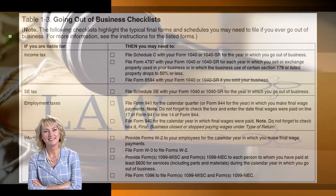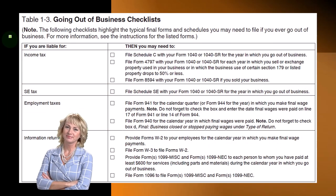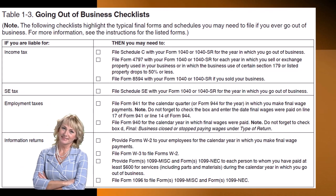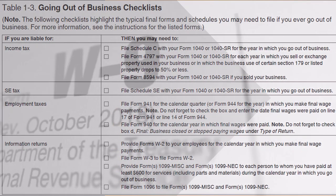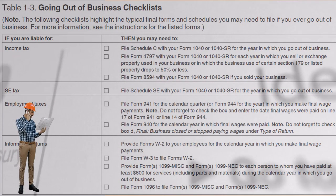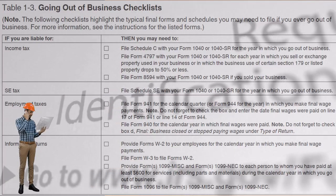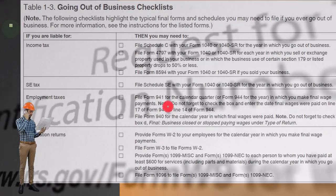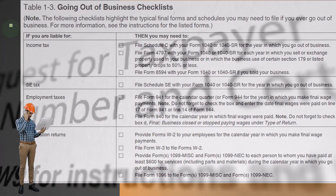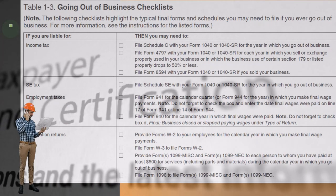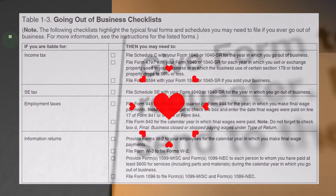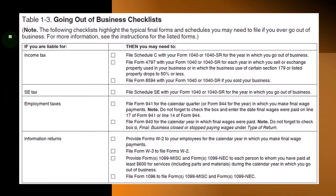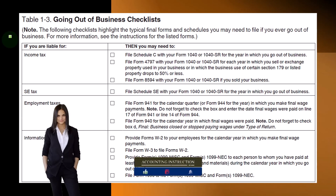Here's a going-out-of-business checklist. When you start a business, it's actually sometimes easier to get the business up and running than to take the business back down. If you've got an EIN number, are reporting 1099 forms, or have structured a separate entity like an S corporation or LLC, those can be quite difficult to deconstruct — and there's both a state and federal component. You want to close them properly or you can end up with issues and fees in the future. The following checklist highlights the typical final forms and schedules you may need to file if you ever go out of business.